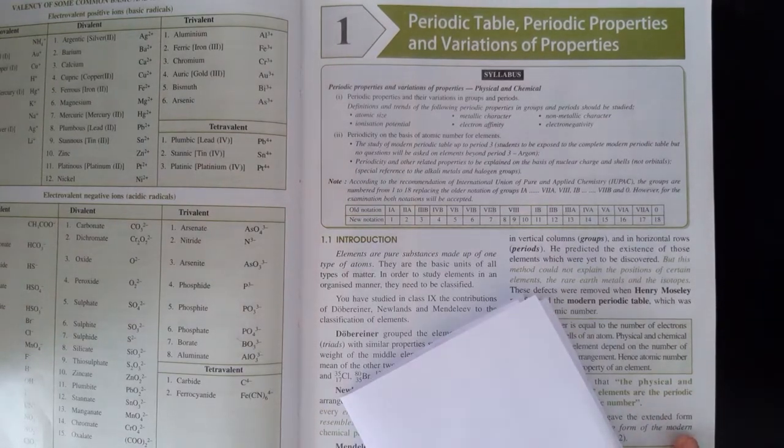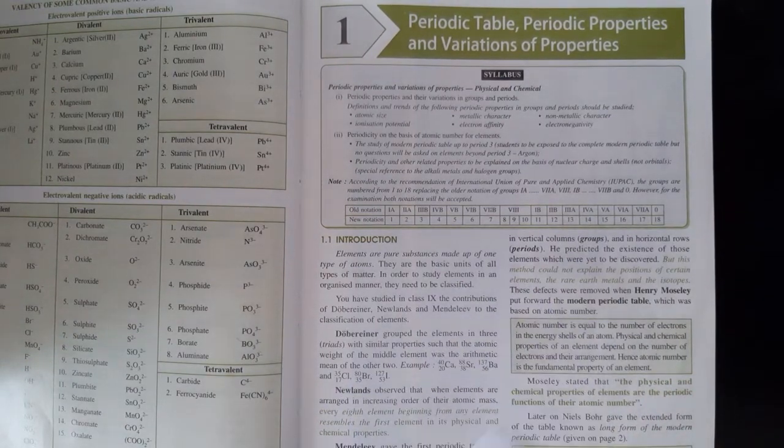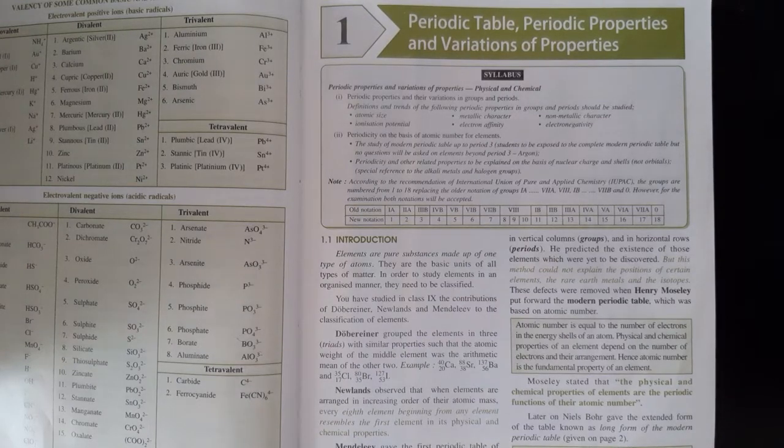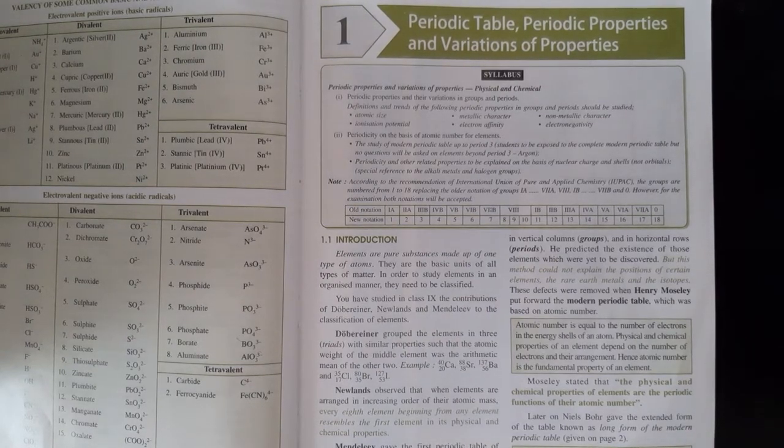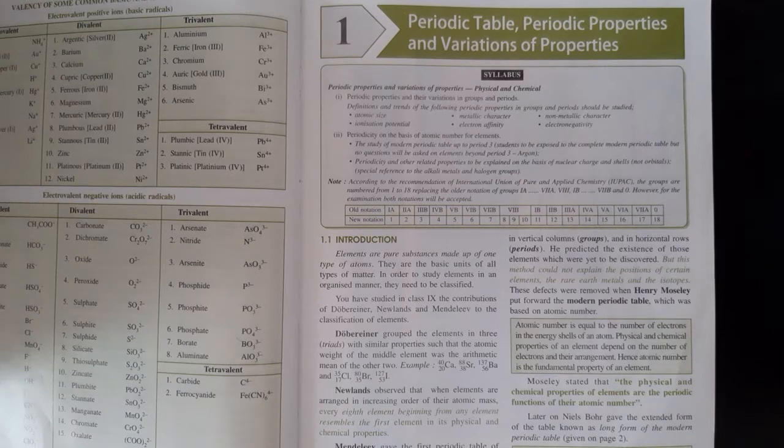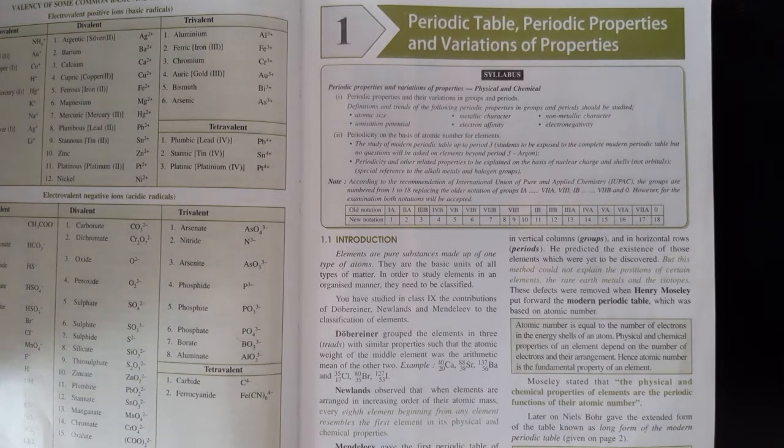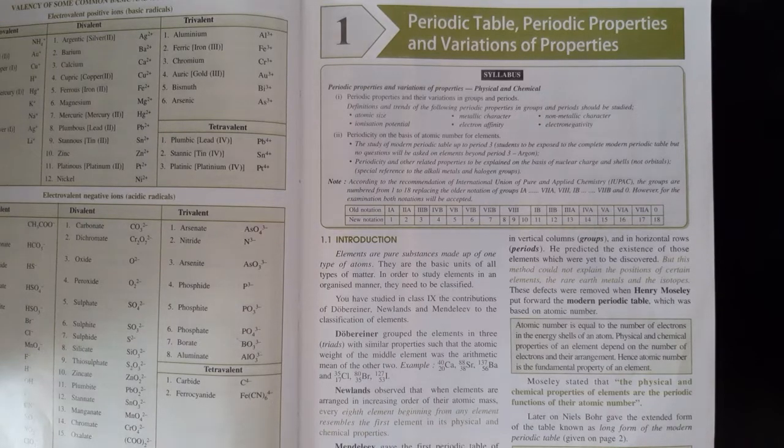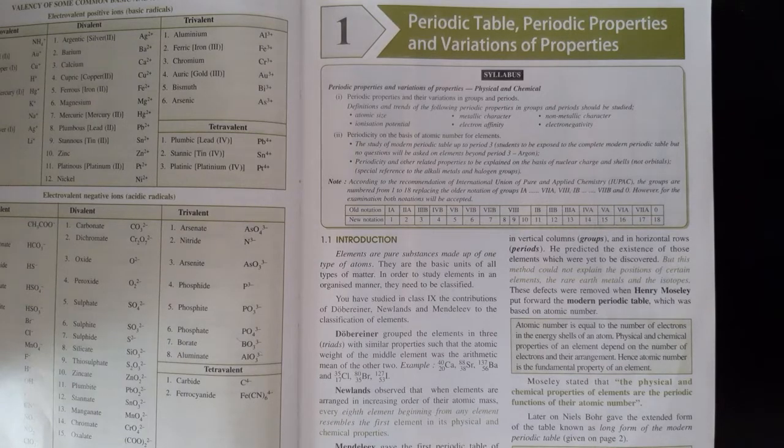What are elements? Elements are pure, formed from only one type of atoms. They are the basic unit of matter. Now what is matter? Anything that occupies space and has a mass is known as matter. Matter is classified into solid, liquid and gases.